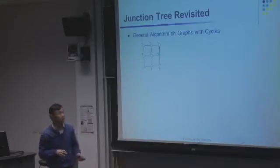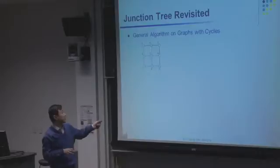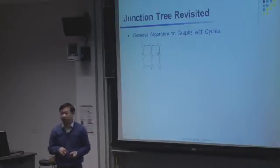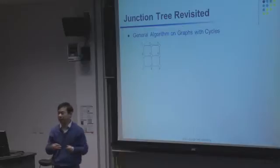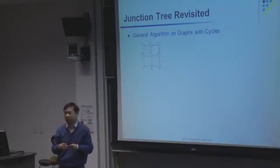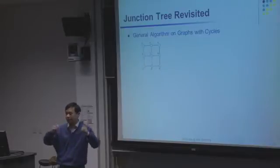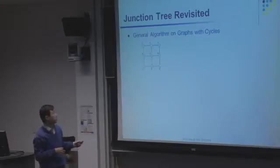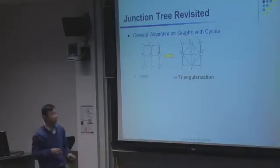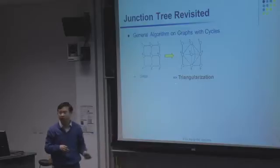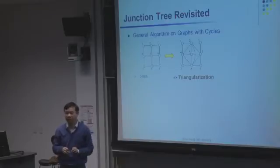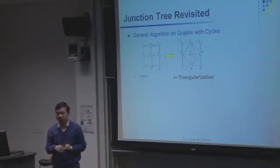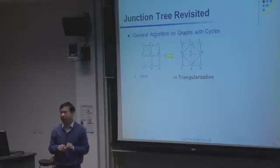When we run into a complicated graph with cycles, one way to rescue the situation is to create a tree out of it using the junction tree algorithm. We turn the graph into a junction tree through an operation called triangulation. If you're interested in details, you can read Daphne Koller's book, which has a very precise and detailed illustration of how that happens.